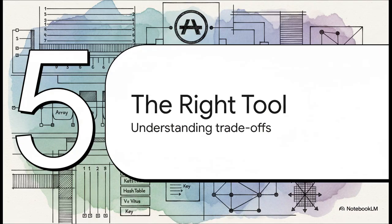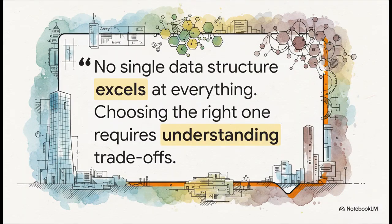We've covered a lot of ground, from really simple lists to these complex networks. So how do we put it all together? The single most important takeaway from all of this is understanding that every single choice involves a trade-off. This gets to the absolute heart of it. There is no silver bullet. There's no one best data structure. The real skill isn't knowing just one of them, it's in deeply understanding the problem you're trying to solve. A great developer analyzes the situation and then chooses the structure that has the right set of strengths and weaknesses for that very specific task.